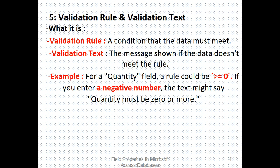For example, for a quantity field, a rule could be greater than or equal to zero. If you enter a negative number, the text might say 'quantity must be zero or more'. Here, the validation rule is greater than or equal to zero, whereas the validation text is 'quantity must be zero or more'.